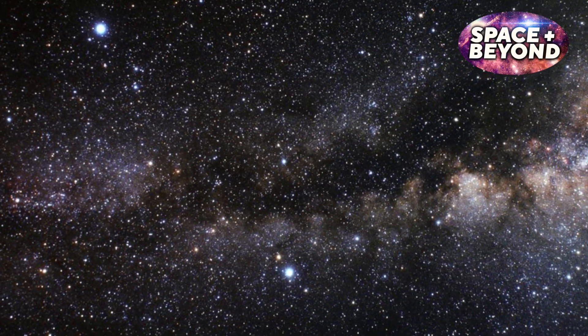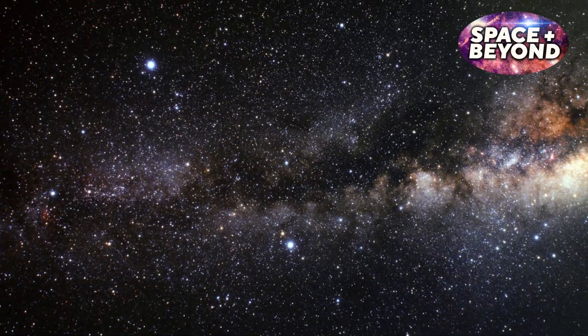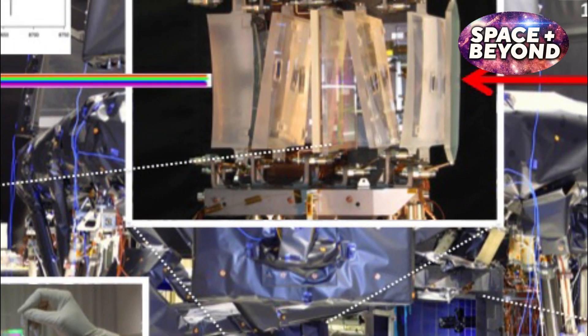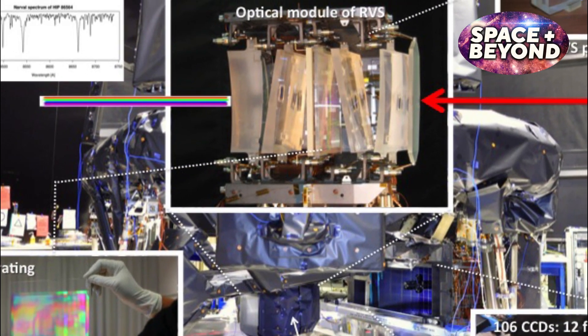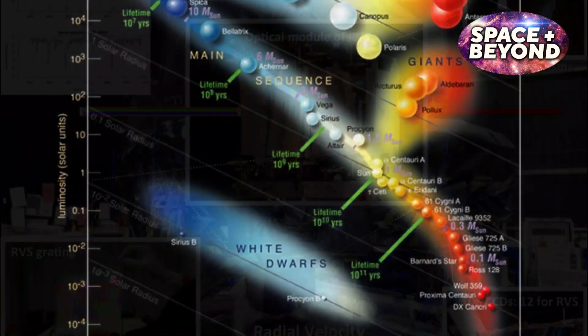As well as its astrometric measurements of stellar positions and motions, Gaia also makes use of its spectroscopic capabilities to investigate the fundamental properties, such as luminosity and temperature, of stars.